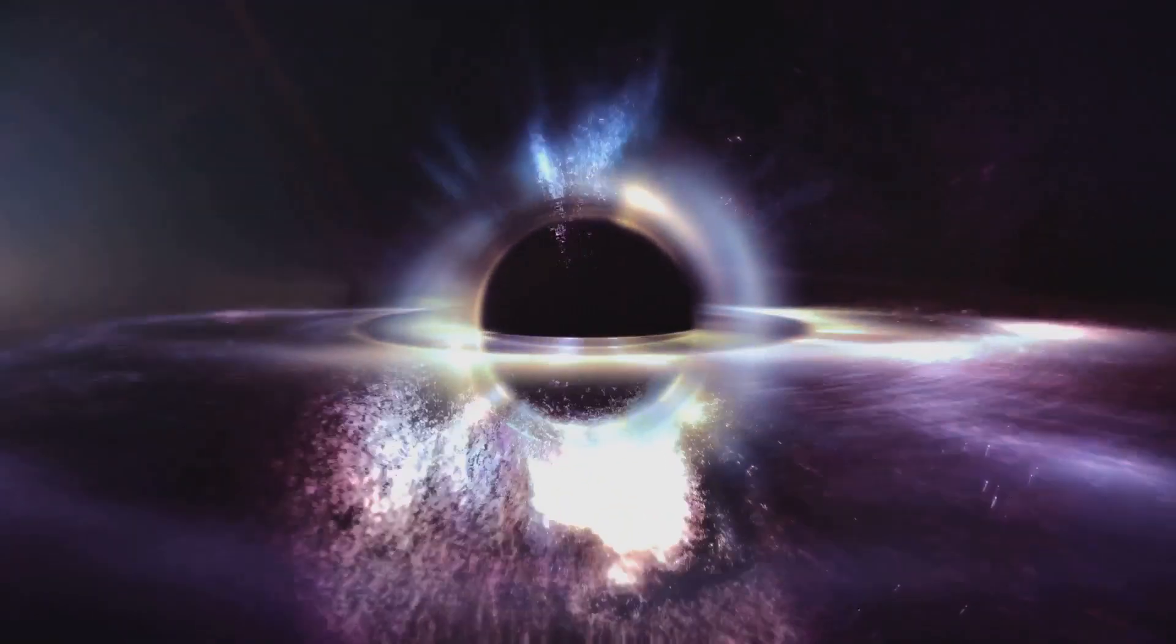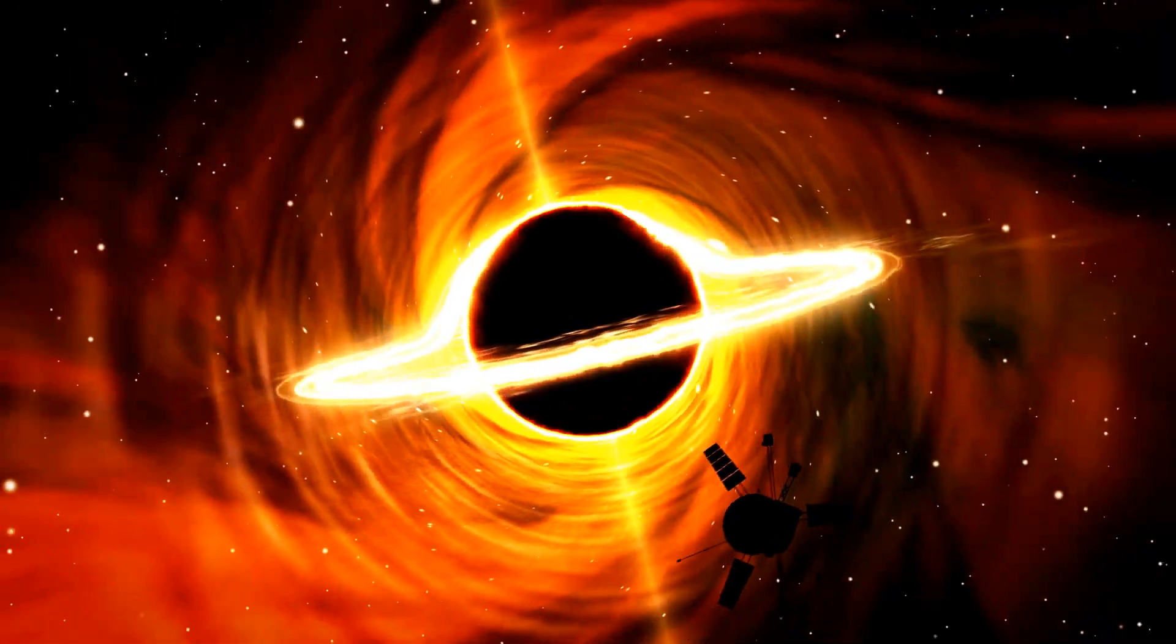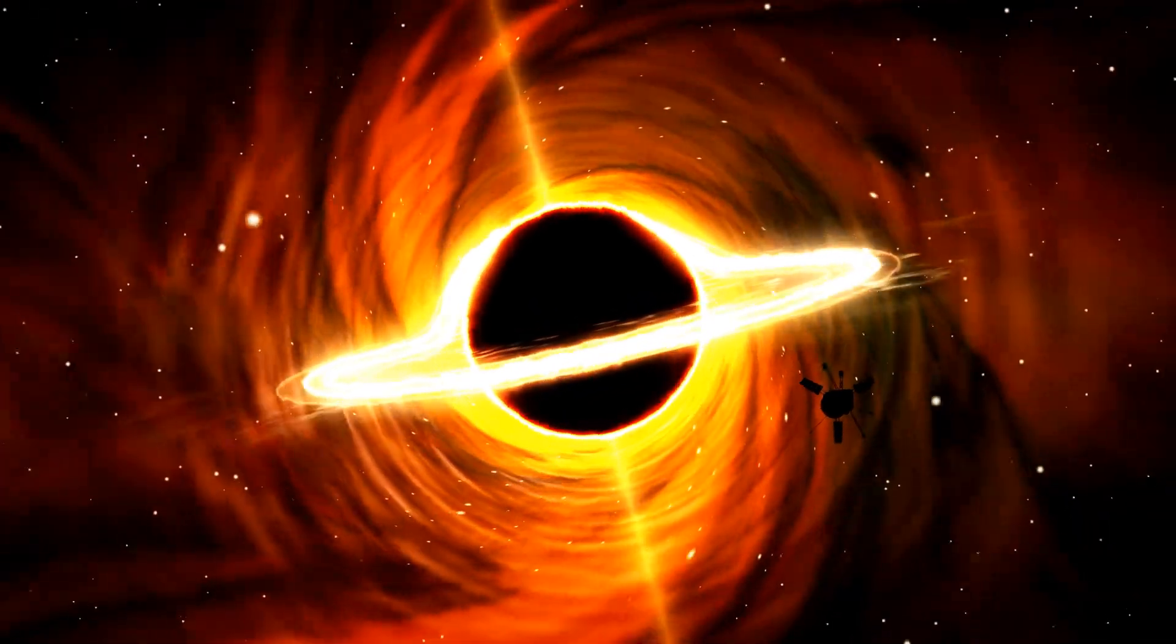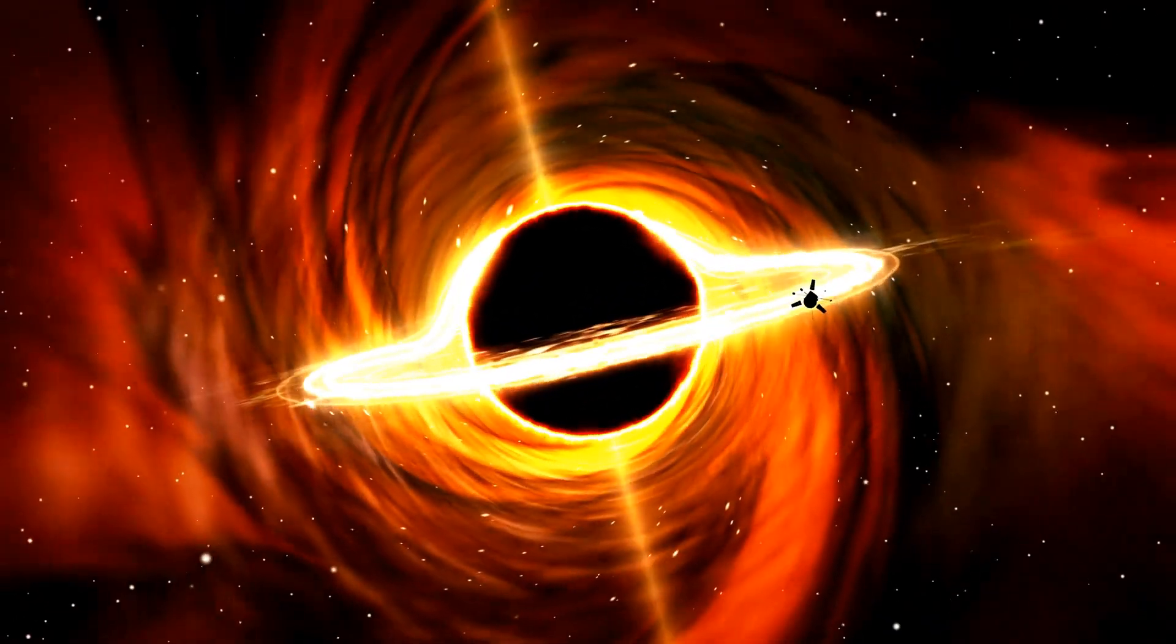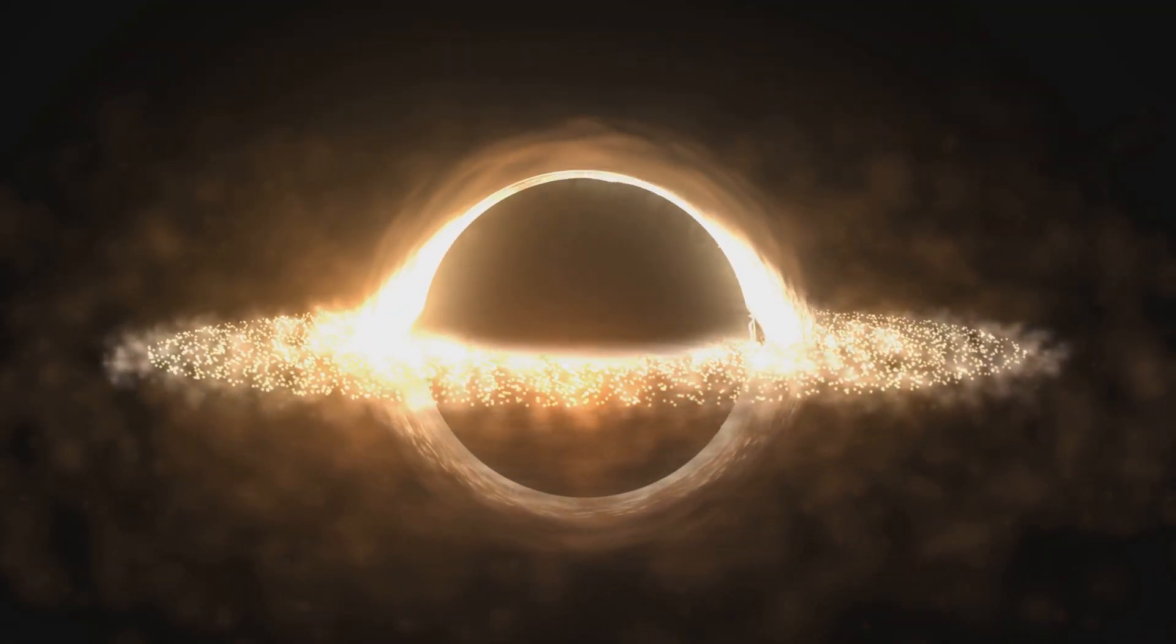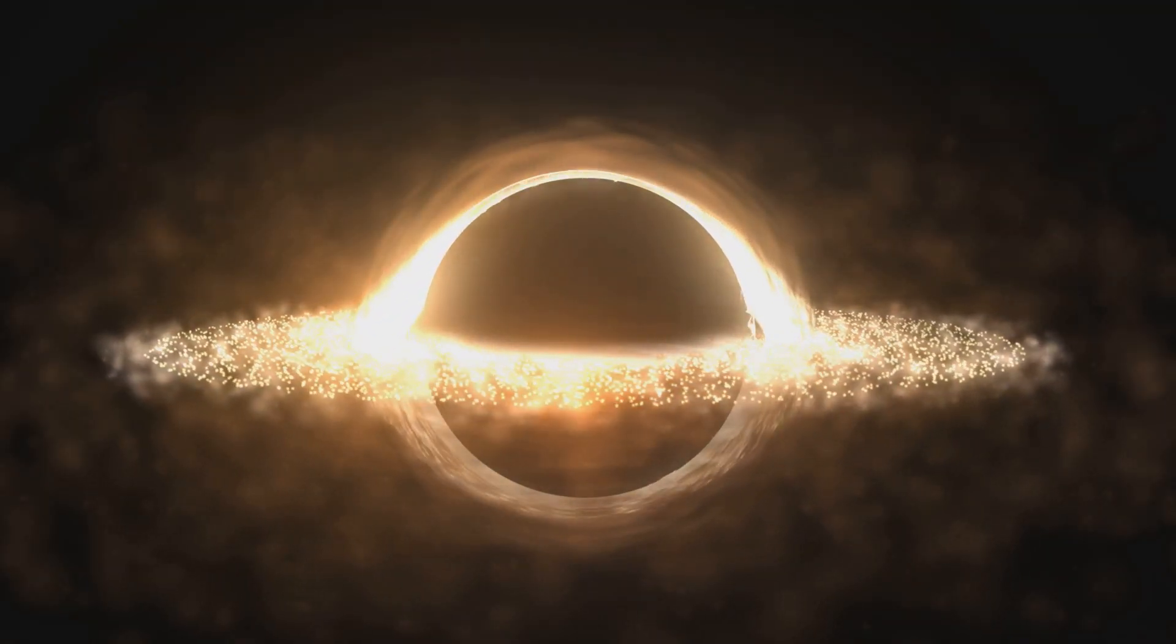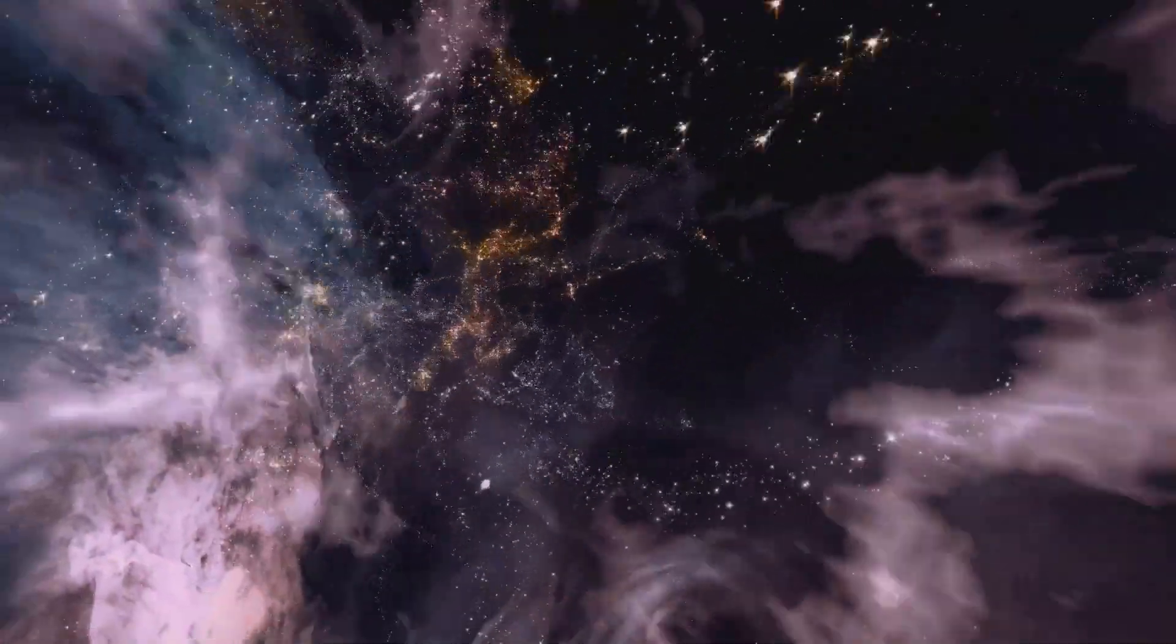Some scientists believe the answer might lie in quantum theory. By combining Einstein's theory with quantum mechanics, it's possible that black holes could eventually transform into white holes over incredibly long periods of time. In this scenario, a black hole might slowly stop pulling matter in and start expelling it, essentially becoming a white hole. But this process would take billions of years.